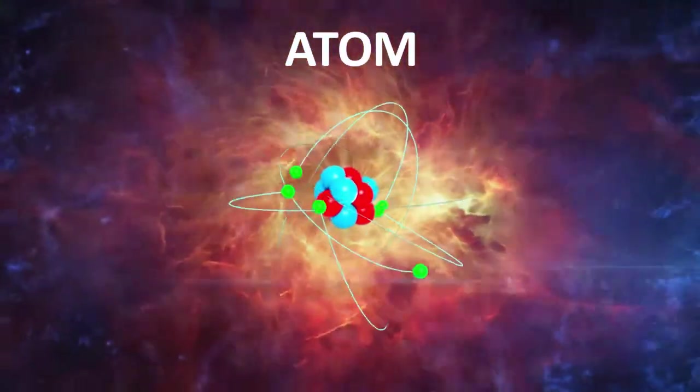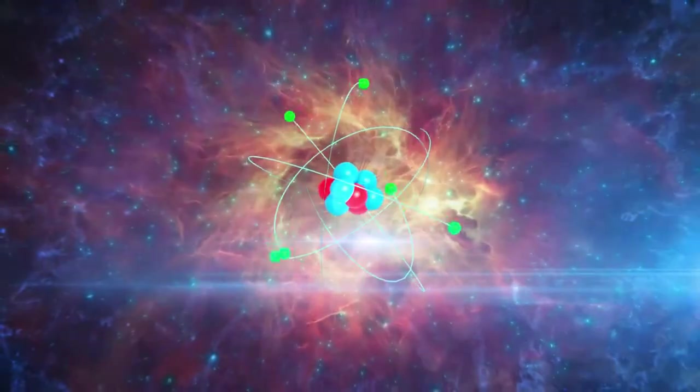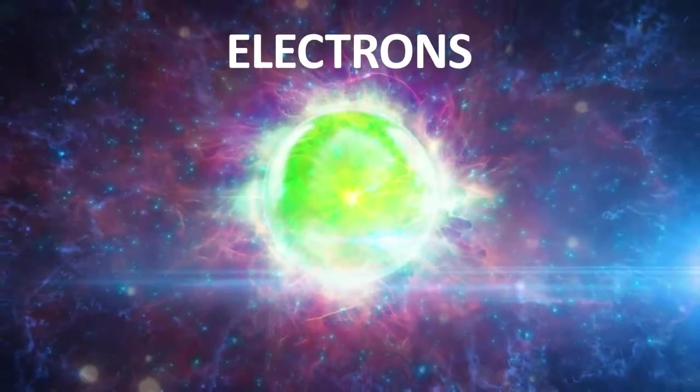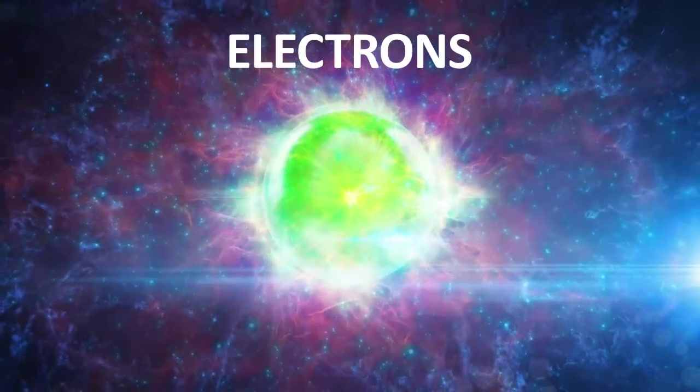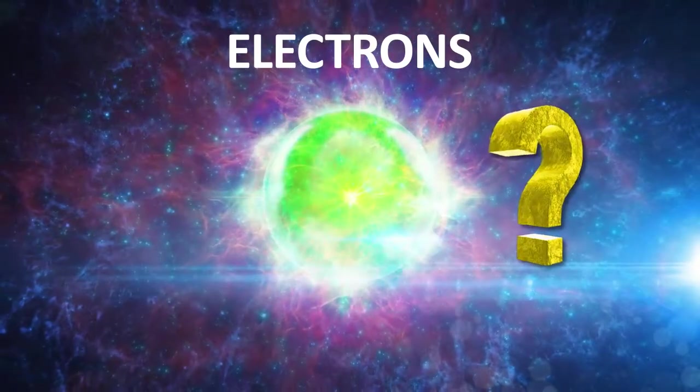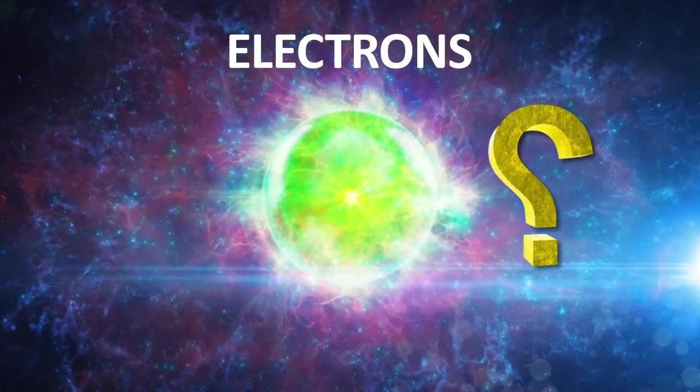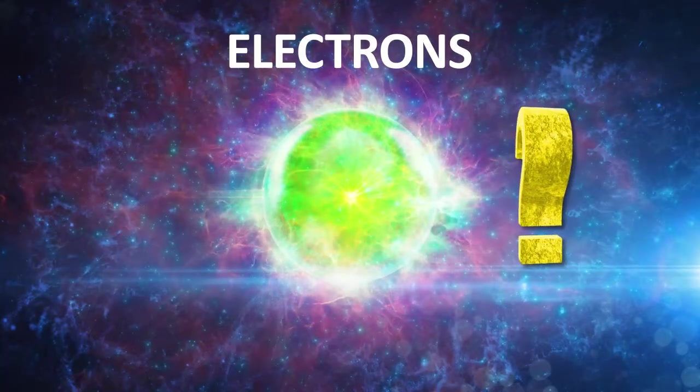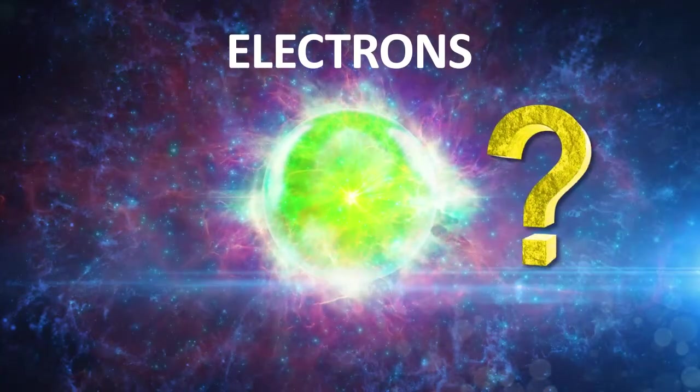As you know, the atom is the smallest particle of matter, and electrons are subatomic particles present within an atom. How was the mass of an electron measured? Was an instrument used to measure it?